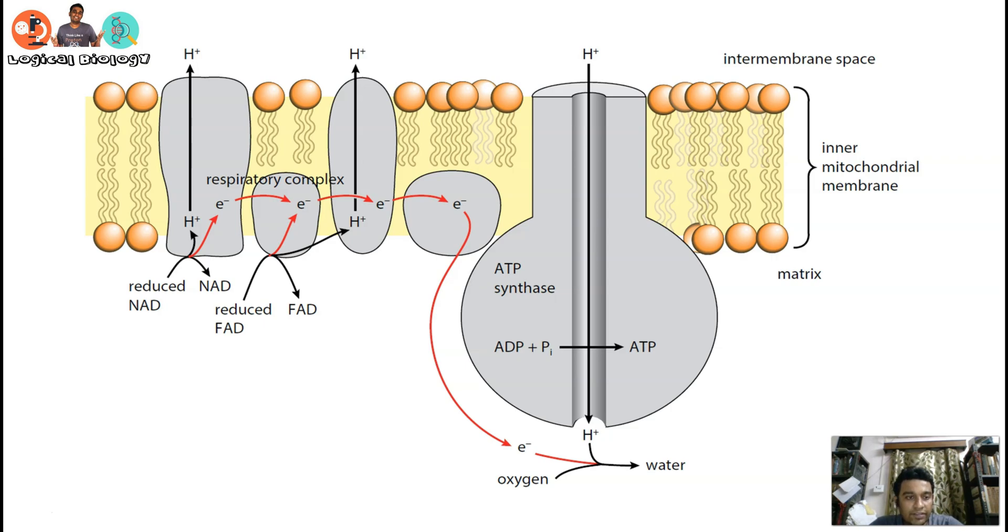First, oxidation is happening for the reduced NAD and reduced FAD. Understand one thing: in this kind of series video, I'm not going to talk about where you are getting this reduced NAD or how it formed - for that, I'll make a separate video on glycolysis, Krebs cycle, and all that.